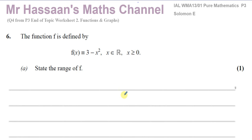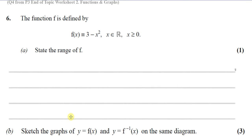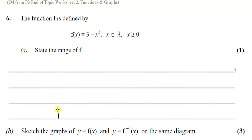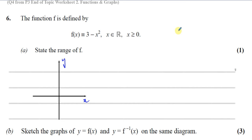We've got to state the range of this function f. In order to find the range, it's always best to think about what it looks like when you sketch it. The range is all the values it can take in the y-direction. It's a pretty simple quadratic — since there's a negative in front of x², it's going to have an opening-downwards shape.